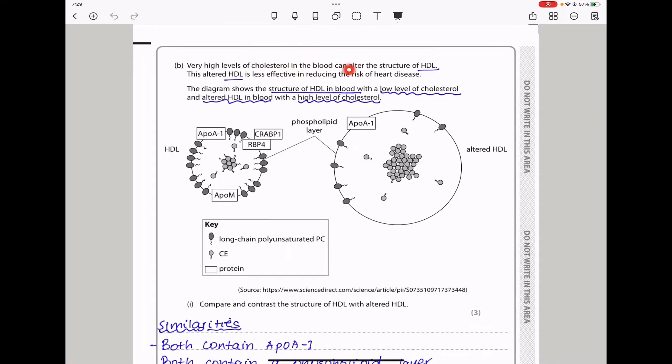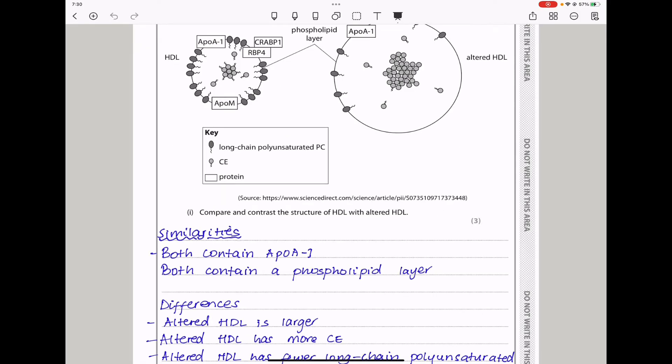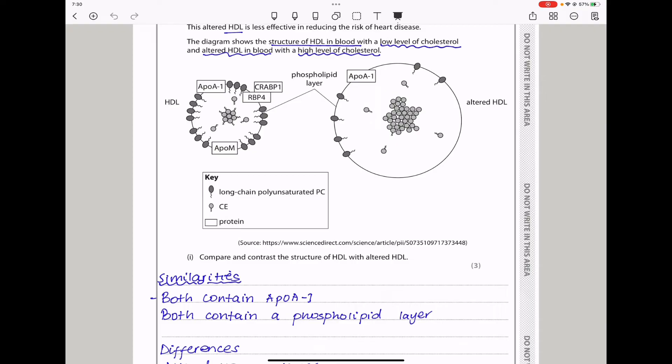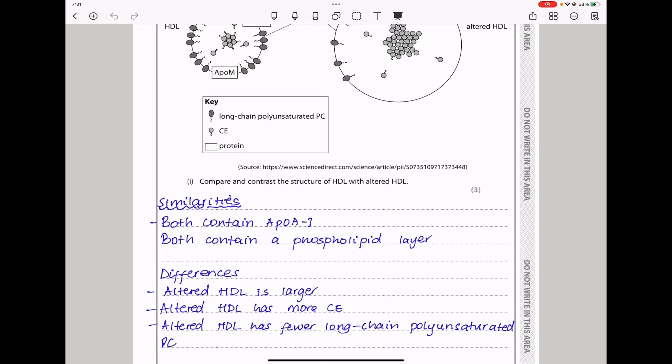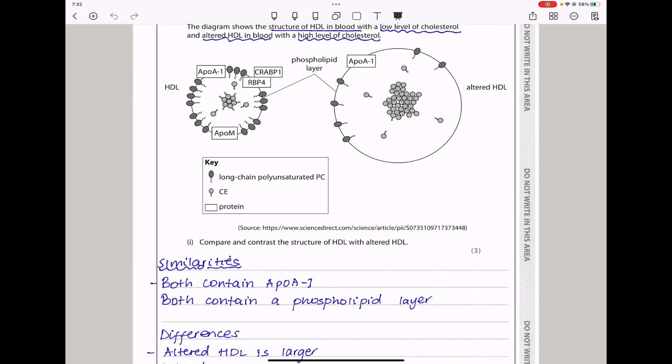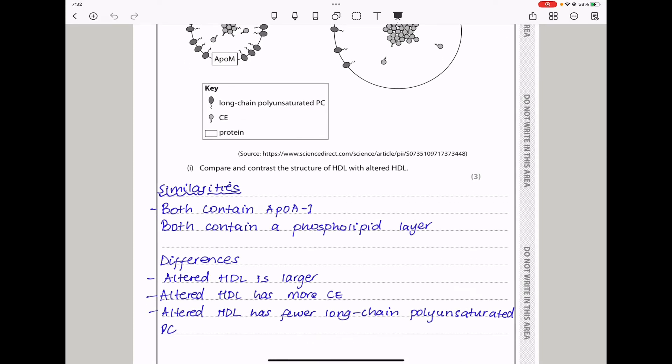Here they say, very high levels of cholesterol in the blood can alter the structure of HDL. This altered HDL is less effective in reducing the risk of heart disease. The diagram shows the structure of HDL in blood with a low level of cholesterol and altered HDL in blood with high levels of cholesterol. Compare and contrast the structure of HDL with altered HDL. Both contain the APOA and both contain the phospholipid layer. Looking at the differences, altered HDL is larger while this one is smaller. Altered HDL has more CE. An altered HDL has fewer long-chain polyunsaturated PCs in comparison to the non-altered one. This one has more CEs, while the other has fewer.